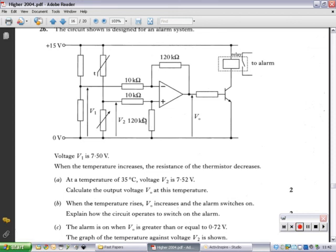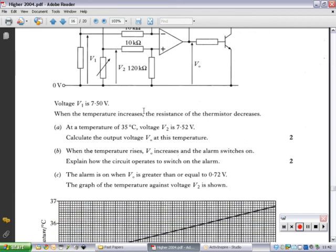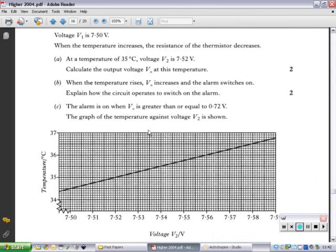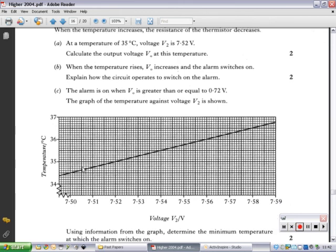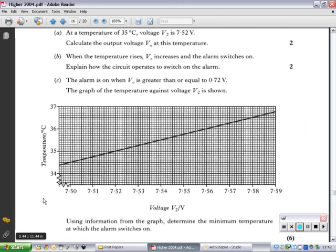I'm going to ask you to do this question for homework. For next week. But, I'm basically giving you all the answers. So, it's not a big deal. Right. So, then, part C there. The alarm is on when V0 is greater than or equal to 0.72 volts. Right? So, it's just saying 0.72. So, some transistors, slight variance in what they have to be. We say 0.7. We're saying 0.72 here. The graph of the temperature against V2 is shown. Using information from the graph, determine the minimum temperature at which the alarm switches on.